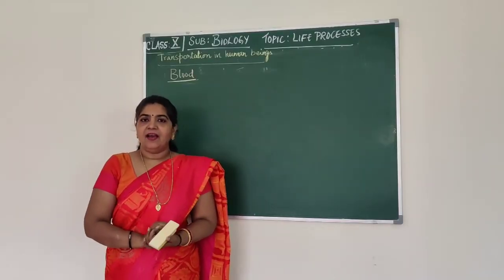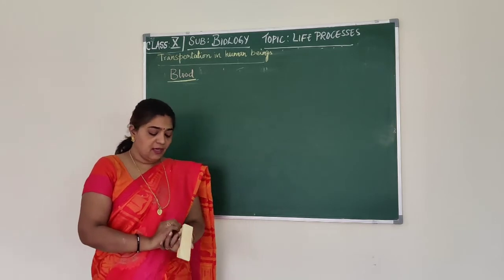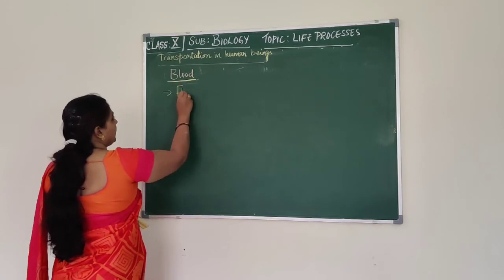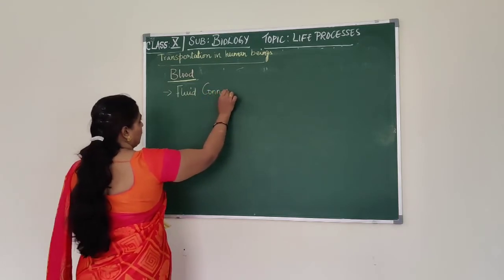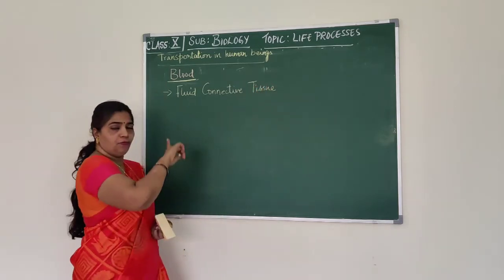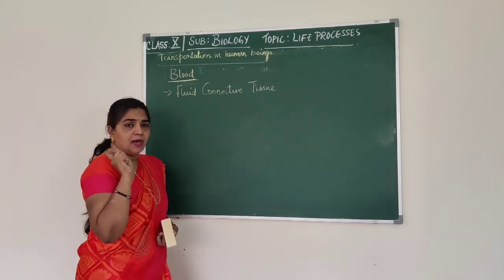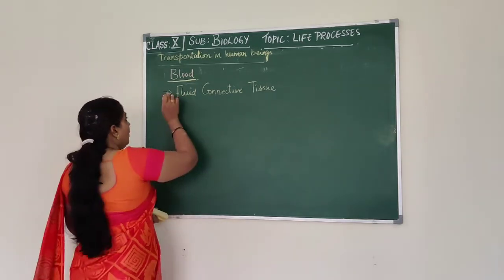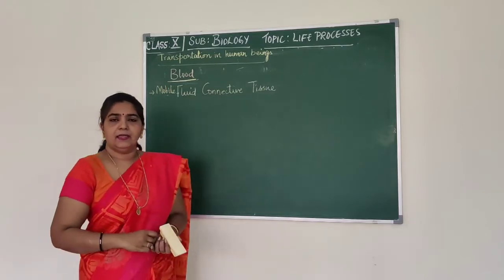Let us learn about what blood is, its functions, and what it is composed of. Blood is a fluid connective tissue. It is a connective tissue because it connects various organs in our body. It flows throughout our body — it is a mobile fluid. It is not stationary; it is a mobile fluid connective tissue.